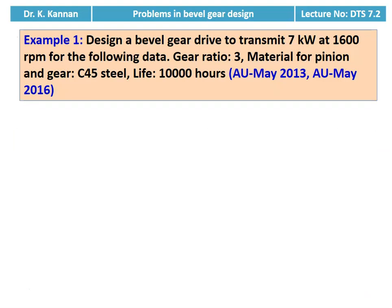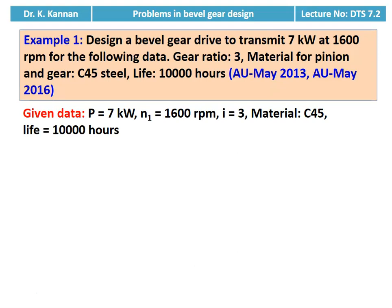The first example is from the question paper of May 2013 and May 2016: design a bevel gear drive to transmit 7 kilowatt at 1600 RPM. Gear ratio is 3, material for both pinion and gear is C45 steel, and life is 10,000 hours. Given data: power = 7 kW, pinion speed N1 = 1600 RPM, speed ratio i = 3, material C45 for both pinion and gear, life = 10,000 hours.